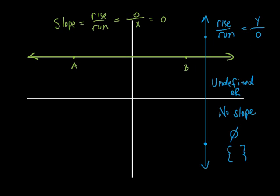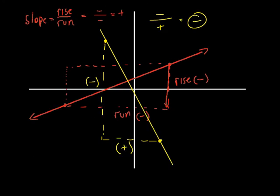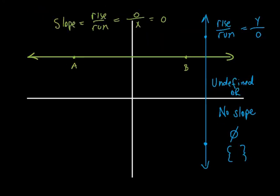So I showed you why this was positive, why this was negative, why this was zero, and why this was undefined. Hopefully that helps in understanding those things. Tomorrow we're going to start putting some numbers in and figure out what the slopes actually are. I'll give you a worksheet tomorrow. For those guys who are football players, I'm going to give you a worksheet today in case you don't get it tomorrow.